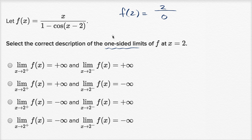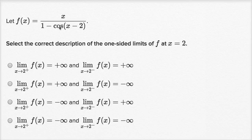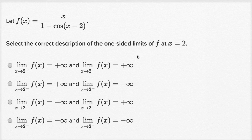Let's try to approach this. There are actually a couple of ways you could do it. One way is without a calculator by inspecting the properties of the cosine function — if that inspires you, pause the video and work it out. The other way, if you have a calculator, is to use a table like we've done in other example problems.